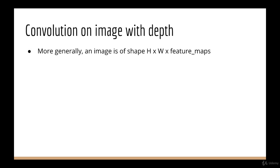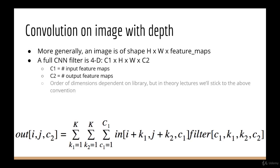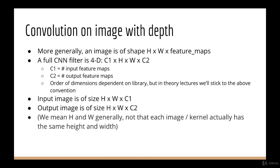So a full CNN filter is actually 4D. We can say it's C1 by height by width by C2. Again, what order these dimensions are in are dependent on what library you're using, but at least in these theory lectures, I'm going to use the convention that C1 represents the input feature maps so it goes in the front, and C2 represents the output feature maps so it goes at the end. The key part is that the input image is of size height by width by C1, and the output image is of size height by width by C2. So images in a CNN are always 3D, where the third dimension is feature maps or color.